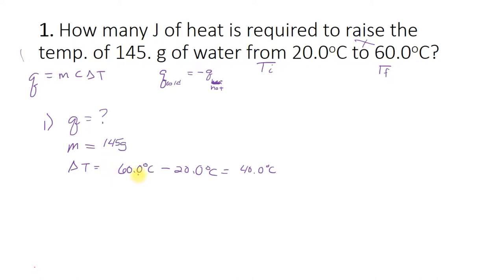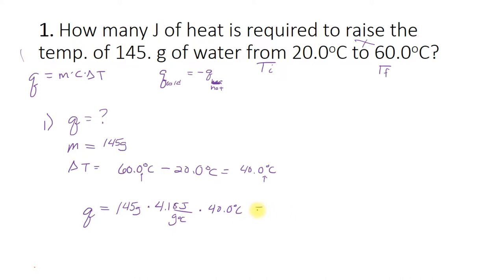This difference is 40 degrees. It's really important to pay attention to significant digits. When we subtract, it's actually place value that matters — they both have a tenths place, so my answer must have a tenths place. When I plug this number into my equation, I'm going to make sure to keep those zeros because they're significant. So we're trying to find Q: the mass is 145 grams times the heat capacity — the heat capacity of water is a constant — then I multiply by the change in temperature. So here we have the full equation Q = mcΔT.